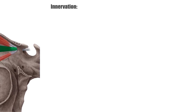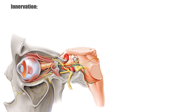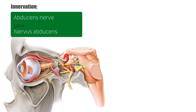Nerve supply to the lateral rectus muscle is derived from the sixth cranial nerve, the abducens nerve. The abducens nerve is highlighted in green and shown on the medial surface of the reflected lateral rectus muscle.